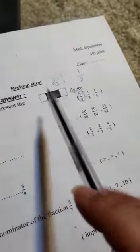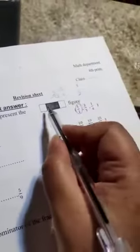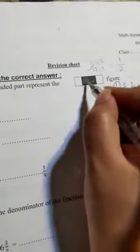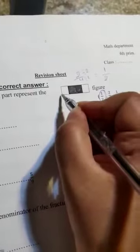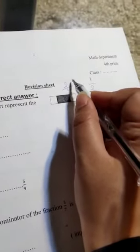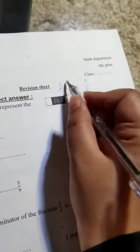Another way, if I put a line here, this is two shaded parts out of all the parts: one, two, three, four down. Two over four. There is no two over four, I will simplify. Divide by two, divide by two, it will be one over two, one half.